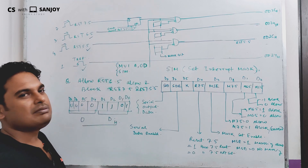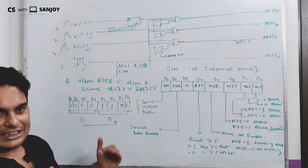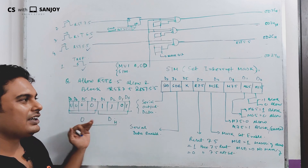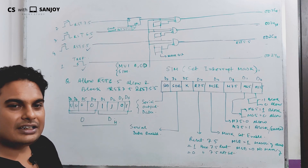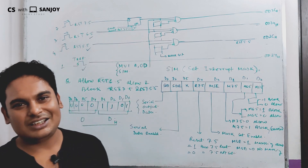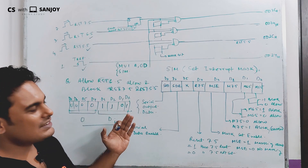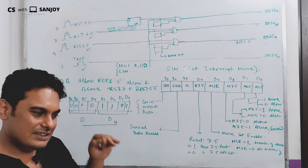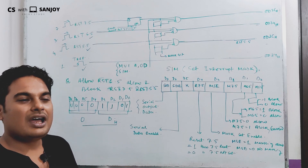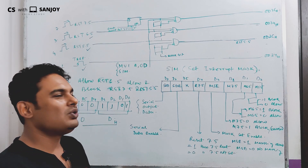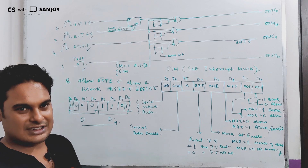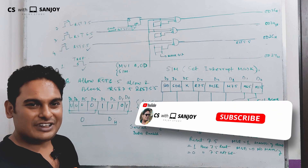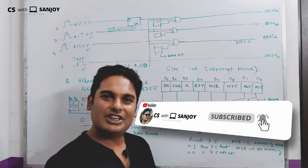Then we put only the SIM instruction. That will set the interrupt masks. This is how we can set the interrupt masks — this gives a clear idea about how we do masking in the system, what a maskable interrupt is, and how it is controlled with instructions. Please share with your friends to spread knowledge. Thank you for watching our video, keep watching our channel.